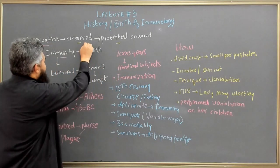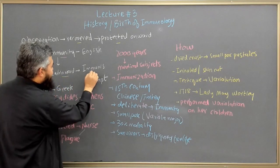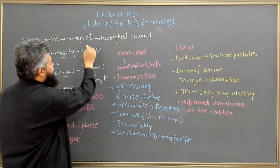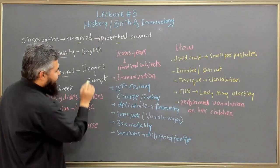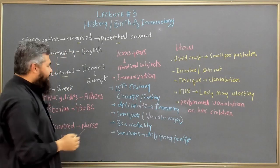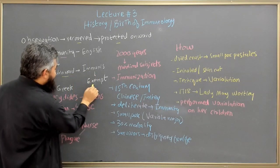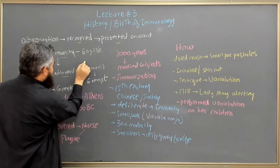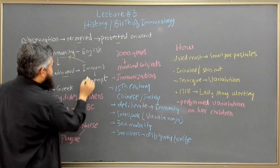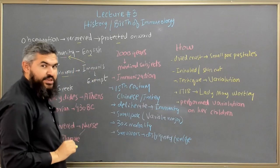This belief led to the Latin term 'immunus,' which means exempt — meaning that once you have recovered from a particular pathological condition, you are exempted from it. This Latin term 'immunus' was converted into the English term 'immunity.'